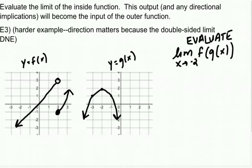Okay. So now we're going to do the slightly harder examples where the direction really matters. So let's start with evaluating this limit of the inside function. So I want the limit as x approaches negative 2 of g(x). Well, here's my x is negative 2. So that limit is definitely a 2.